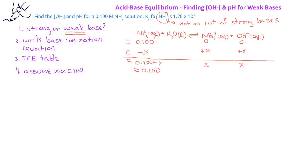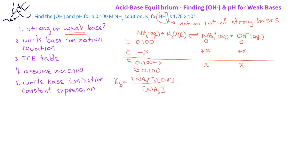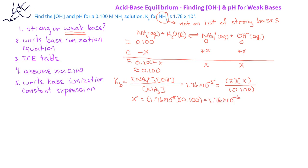We can now write the base ionization constant expression and solve for x. Kb equals the ammonium ion concentration times the hydroxide ion concentration divided by the NH3 concentration. This has a value of 1.79 times 10 to the minus 5. Plugging in the equilibrium concentrations, this equals x times x divided by 0.100. Solving for x: x squared equals 1.75 times 10 to the minus 5 times 0.100, which equals 1.79 times 10 to the minus 6. Taking the square root of both sides, x equals 1.34 times 10 to the minus 3.